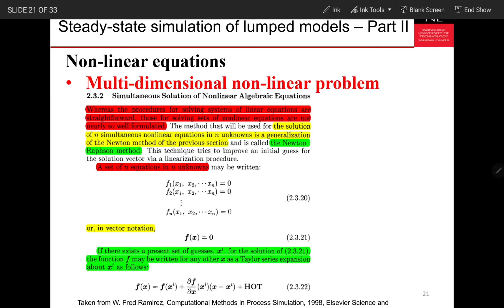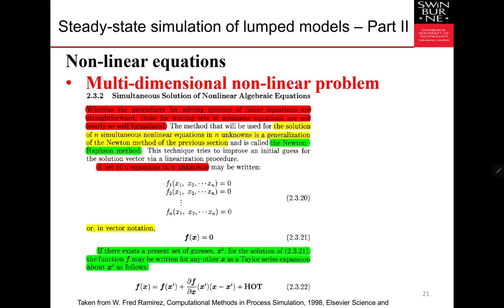This equation basically shows a general representation of what we need to solve. To solve a particular problem with unique solutions, we need to have the same number of equations as the number of unknowns. The most widely used method to solve this is the Newton-Raphson method.